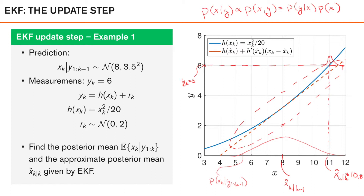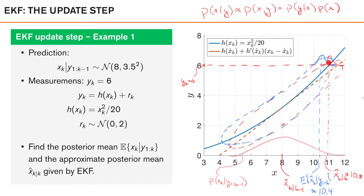With a similar procedure, we can get the true joint by following the non-linear measurement model instead of the linearized one. Looking at the slice where yk equals 6, we get a true posterior, and its mean is around 10.4. In this case, the system is only mildly non-linear, so the linearized model is fairly accurate, and there is not a large difference between the EKF estimate and the true posterior mean. The EKF performs fairly well here.